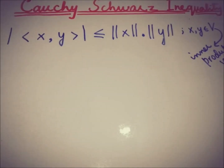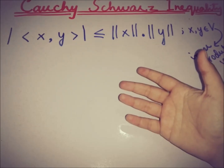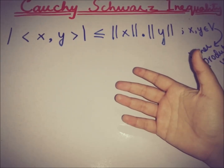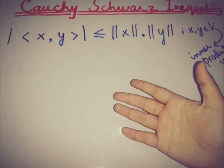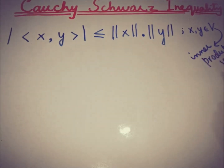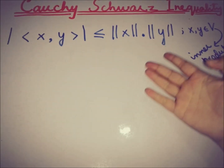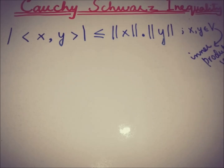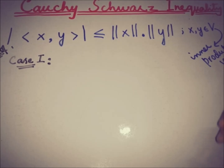For any two elements x and y in an inner product space V, the magnitude of the inner product of x and y is less than or equal to the norm of x times the norm of y. We will prove this now.